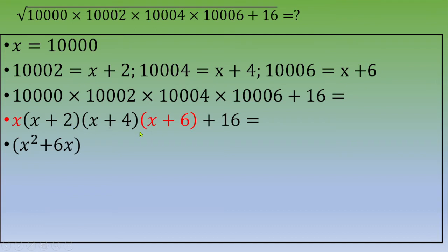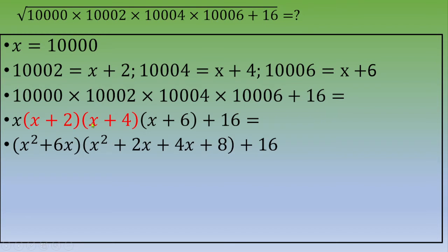Next, we multiply the second and third factors: (x + 2)(x + 4). Expanding this gives x² + 4x + 2x + 8, which is x² + 6x + 8. And we don't forget to add + 16 at the end.